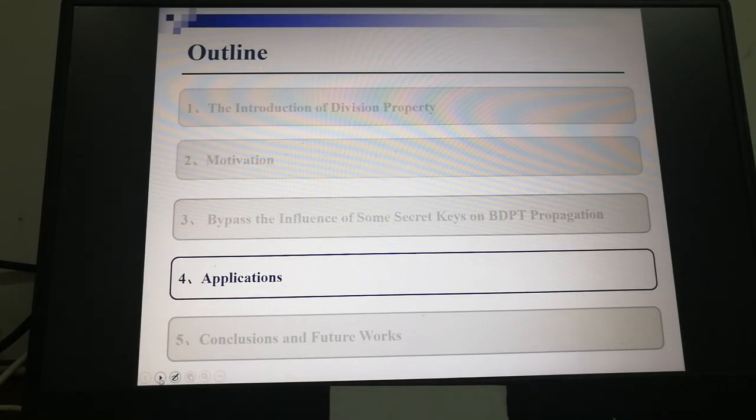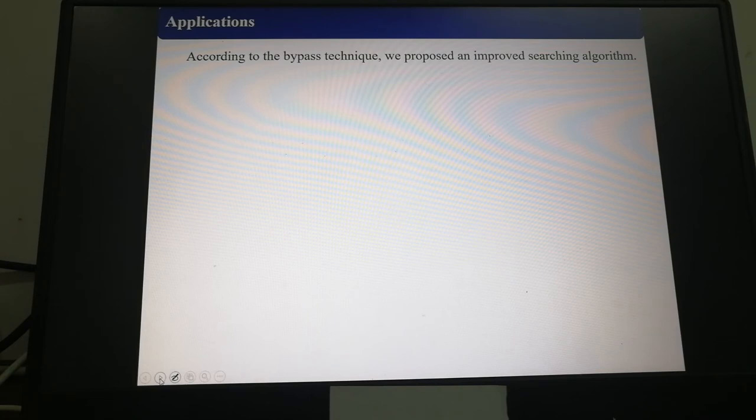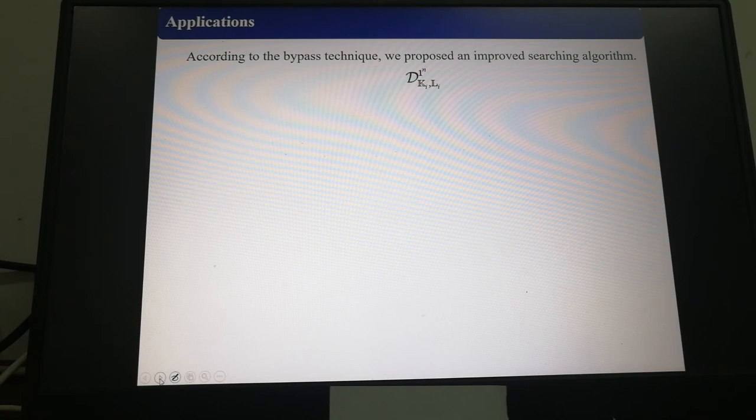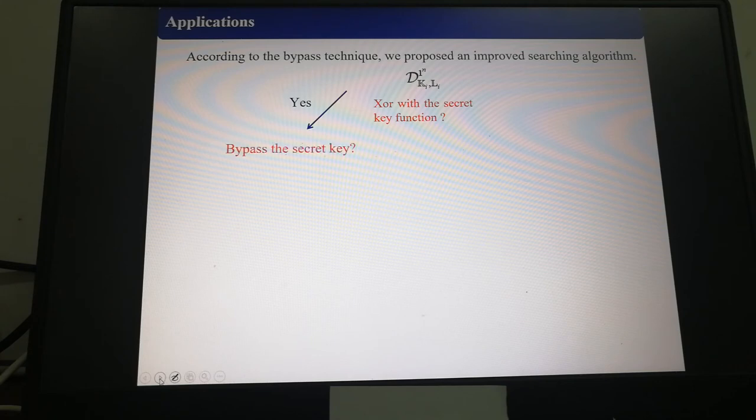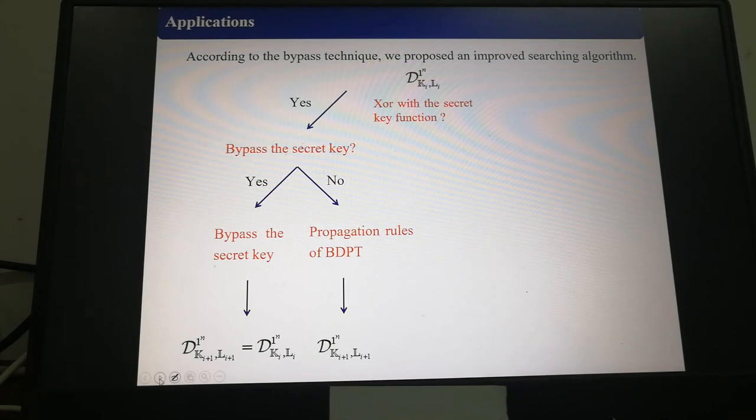The fourth part is applications. According to the bypass technique, we propose an improved searching algorithm. The main framework of the algorithm is as follows. Let a function be f_i and its input BDPT be D_{K_i, L_i}. The first thing, we will identify whether it's XOR with the secret key function or not. If the answer is yes, we will use Theorem 3 to identify can it bypass the secret key? If yes, then we bypass the secret key. If no, we will use the propagation rules of BDPT to get its output BDPT. If it's not the XOR with the secret key function, we will use the propagation rules of BDPT to get its output BDPT.